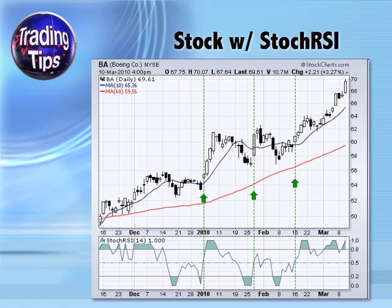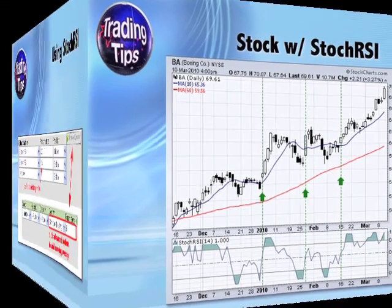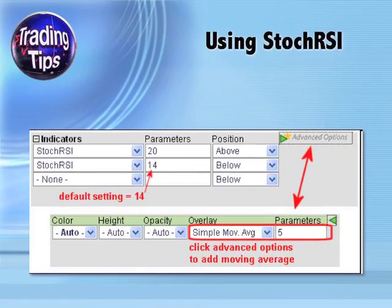Here's an example of a stock chart with a Stochastic RSI underlay. Take a moment to look at what the stock's price did at the points that became overbought or oversold on the Stochastic RSI graph below the price chart. This is a pretty accurate indicator, wouldn't you say?